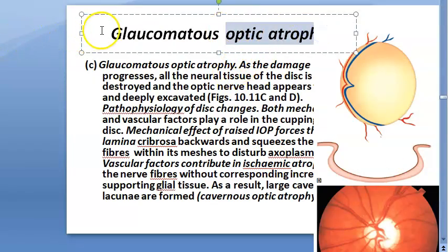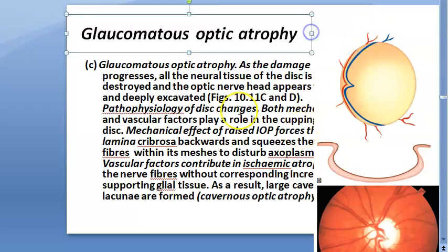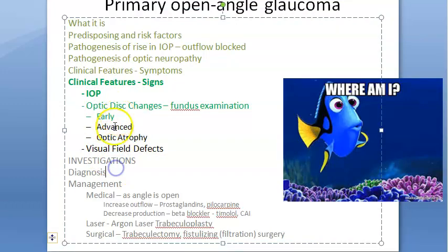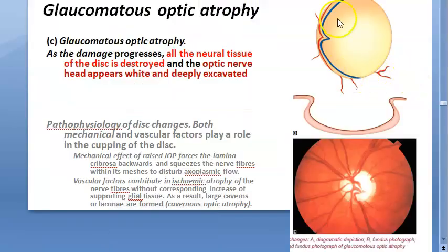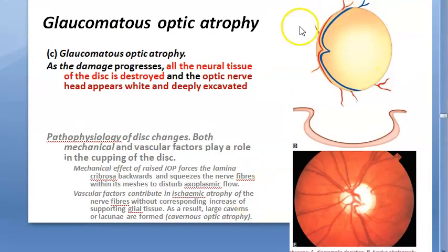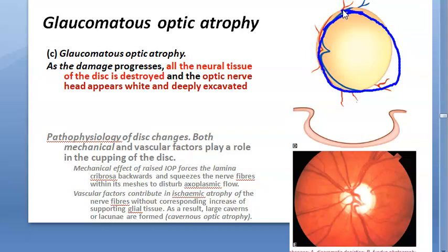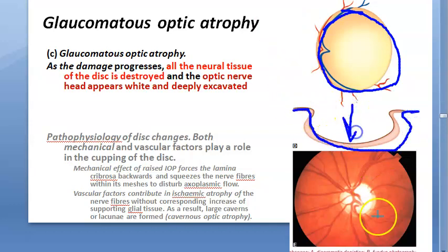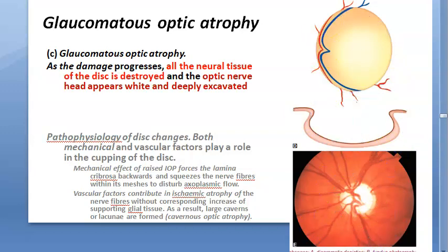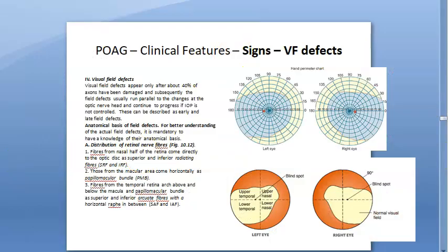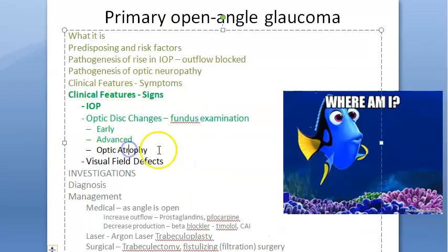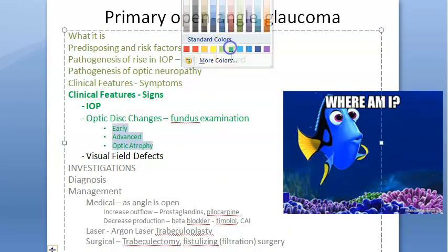If the patient is still not treated, they progress to optic atrophy. In glaucomatous optic atrophy, the neuroretinal rim is totally gone — the neural tissue of the disc is completely destroyed. All you see is a large cup. The optic disc appears white and deeply excavated. There is no neuroretinal rim visible. This occurs due to the same pathophysiology — mechanical forces and vascular factors from chronic high intraocular pressure.